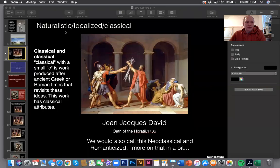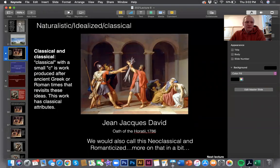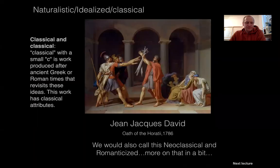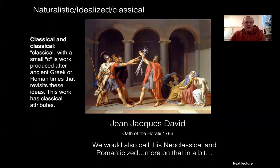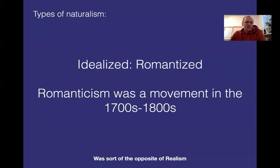Welcome back. Today we are going to look at the other part of naturalistic styles. So let me share my screen and let's take a look. We looked at classical big C and classical little c last time, up to there, and I want to switch to another type of naturalism: idealized and then romanticized.